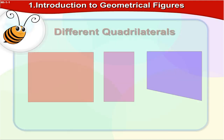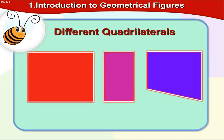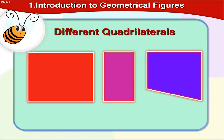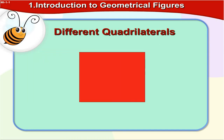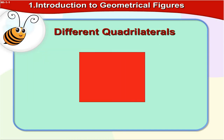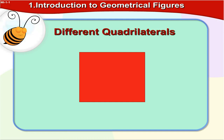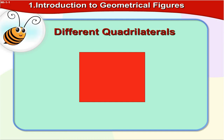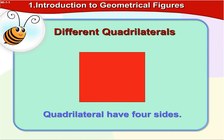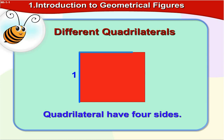Let us start with quadrilateral. See this picture. In this picture, all of them are quadrilateral. A quadrilateral has four sides.